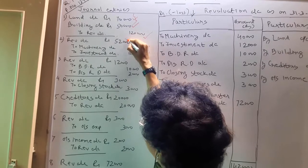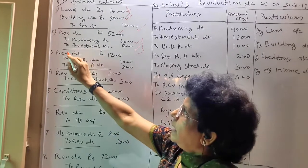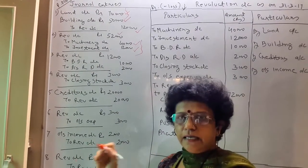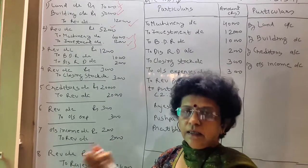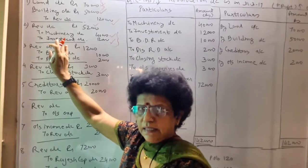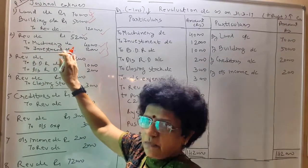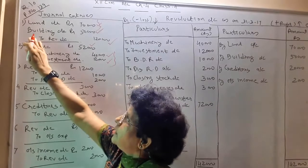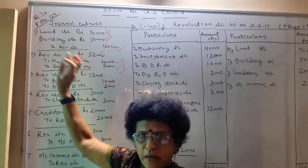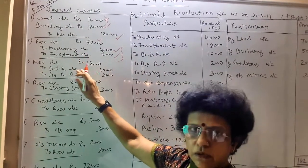Revaluation account is debited by the total figure 52,000, to machine account and to investment account. Now, being in an exam, if it is specifically mentioned that narration is not required, then no need to write narration. If it is not mentioned, then in a very brief manner you have to mention the narration. The narration here will be: 'being revaluation account debited due to decrease in value of assets.' For the first entry, the narration will be: 'being revaluation account credited due to increase in the value of assets.' Since you have learned how to write narration in Class 11, you can manage narration on your own.